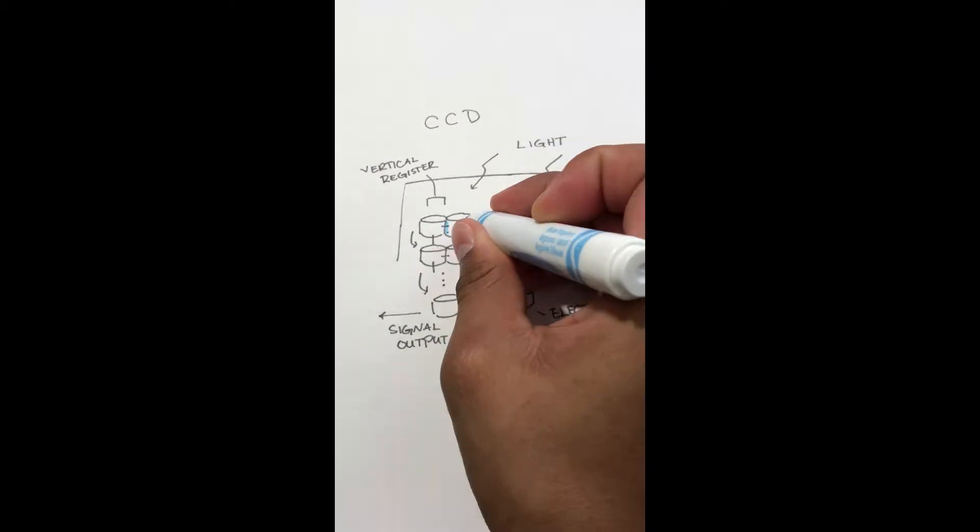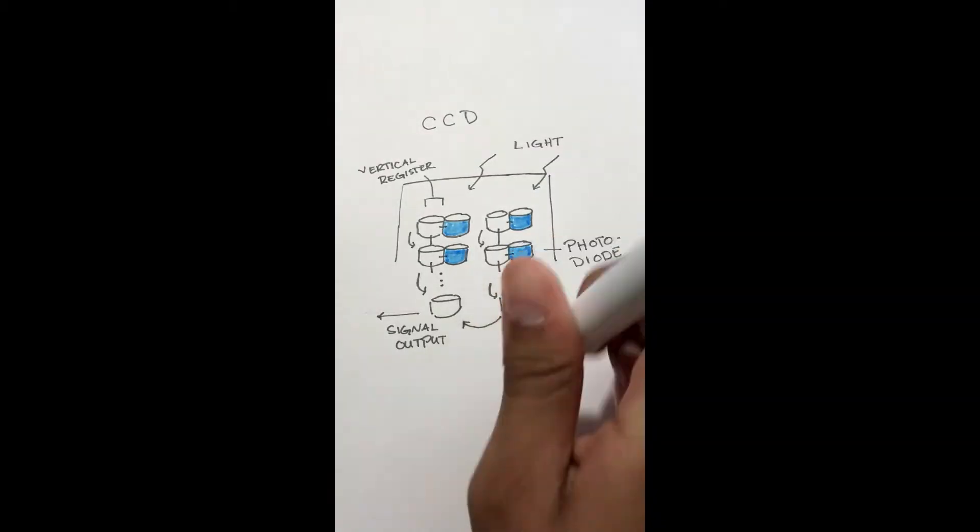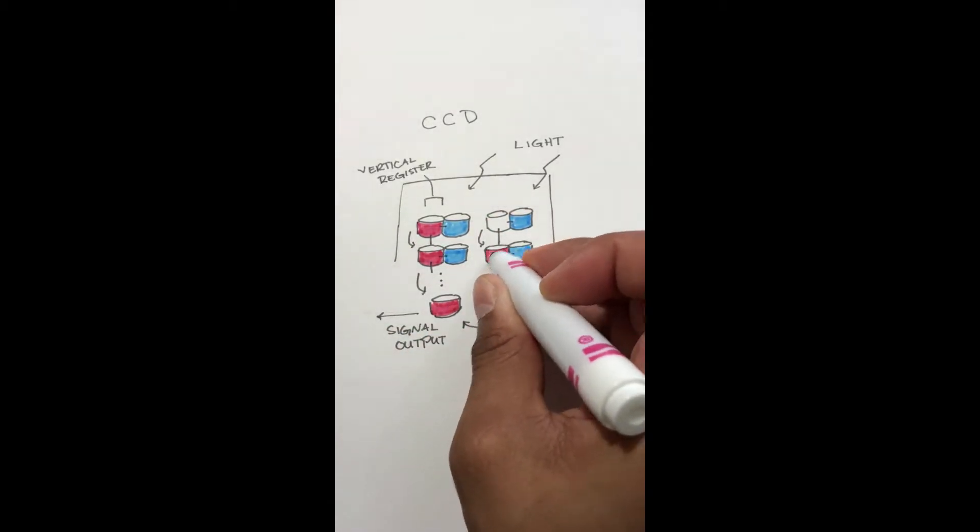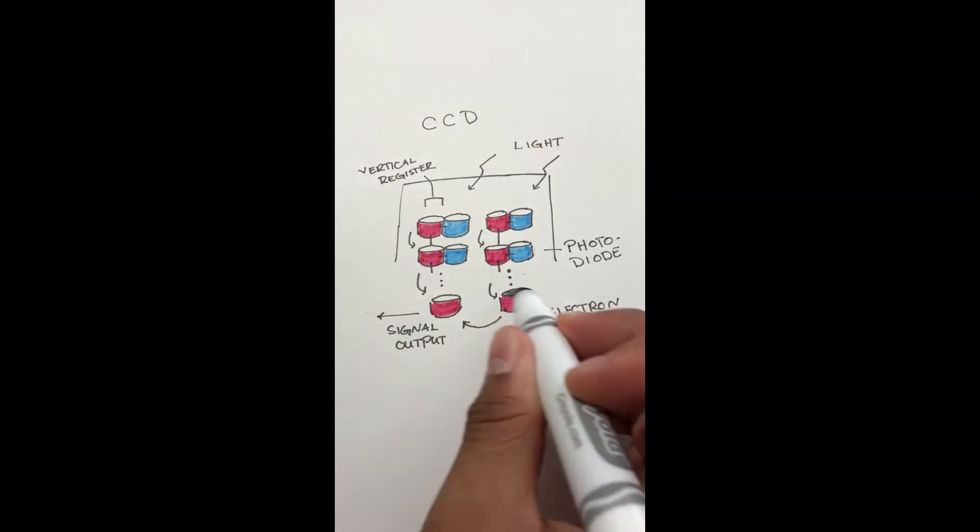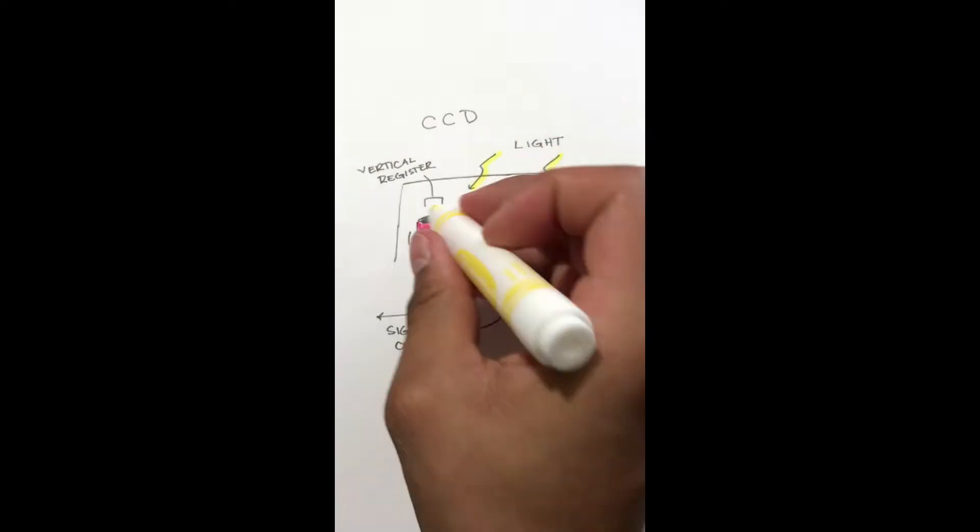Charge coupled devices or CCDs read the light at each pixel sequentially or one at a time. That information is then transported through additional circuitry as an electrical signal and converted into digital information.